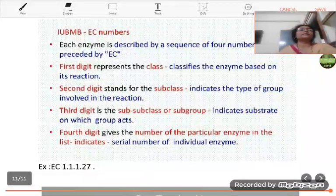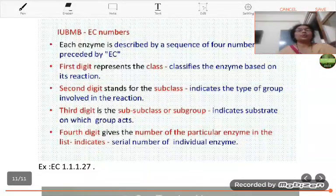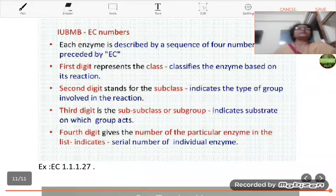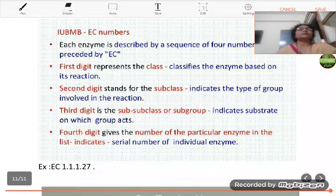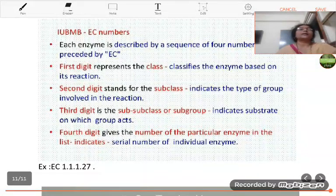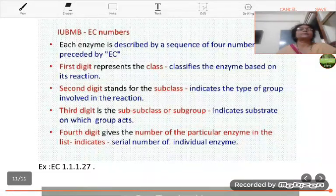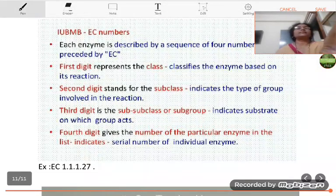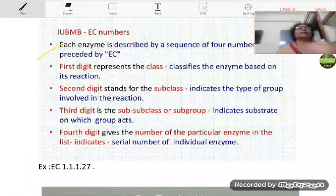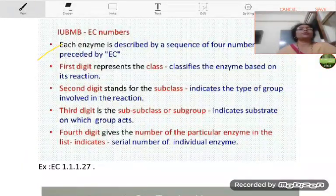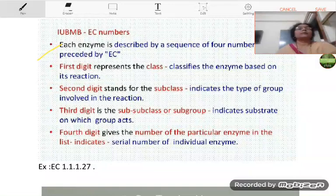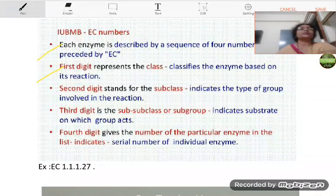Now we are moving towards the code numbers for the enzymes. And these code numbers of the enzymes were given according to the enzyme commission. Here, each enzyme is described by a sequence of four numbers preceded by EC. The first digit represents the class, classifies the enzyme based on its reaction.